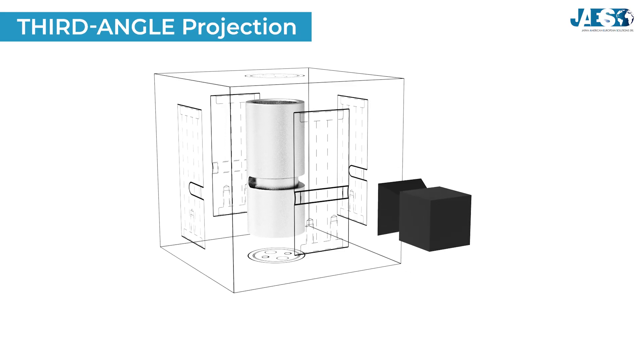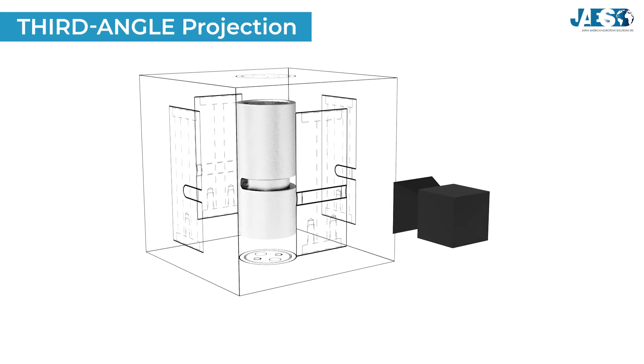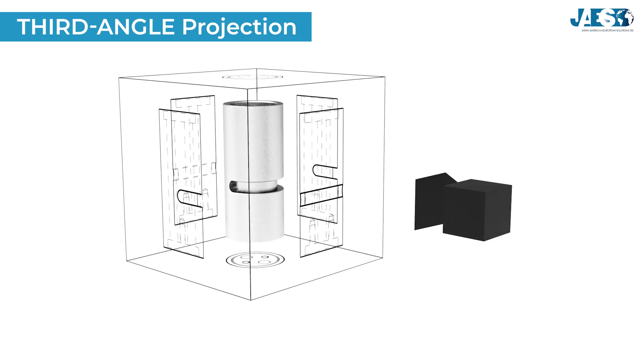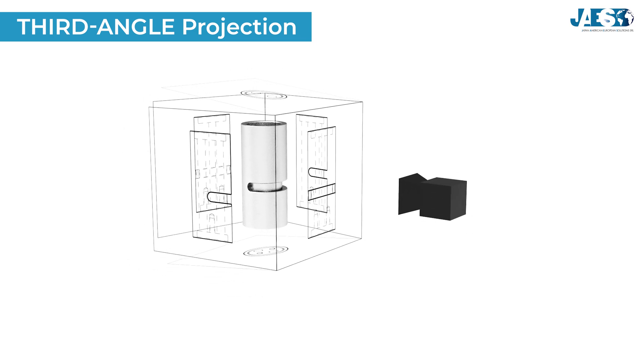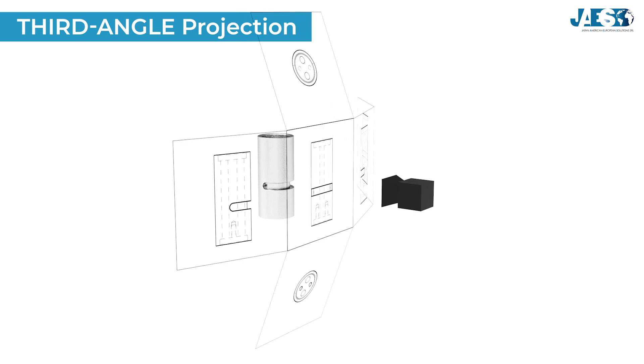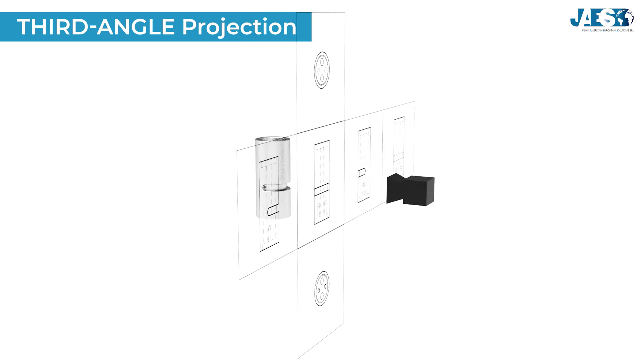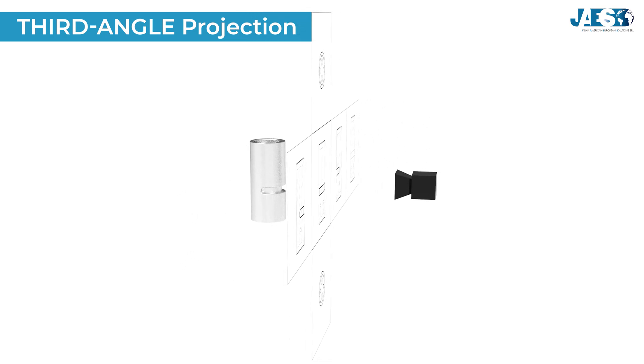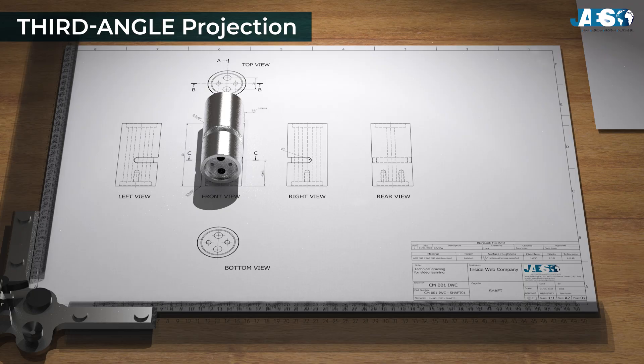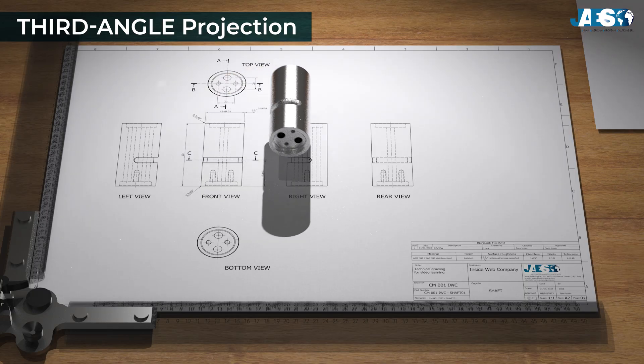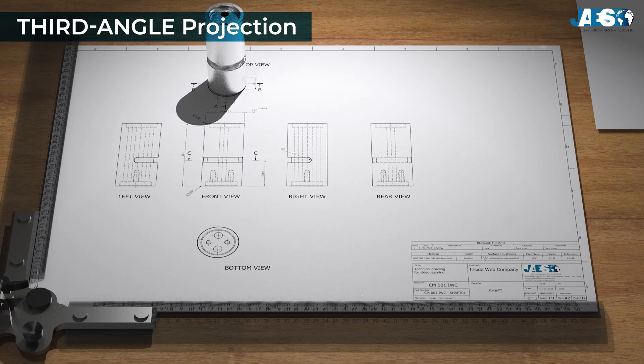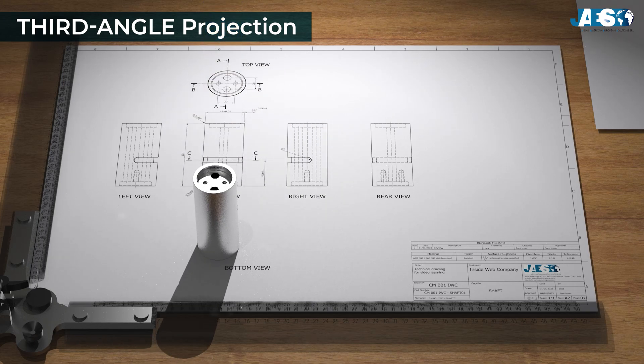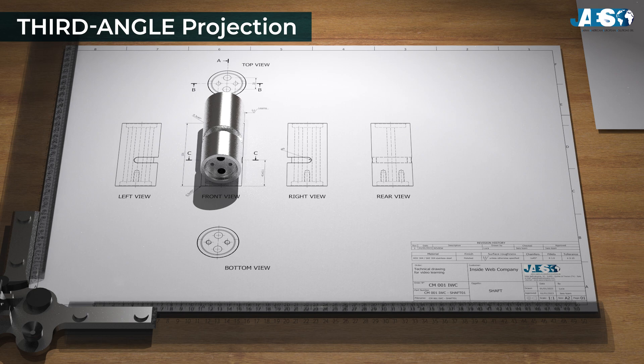In contrast, with the third angle projection, it is the projection planes that are between the observer and the object. Imagining the cube surrounding the object, each view is projected onto the outer walls of the cube to then be unfolded. For simplicity, starting from the front view, we have its right view, top view above, bottom view below, etc.—the exact opposite of the first angle projection.